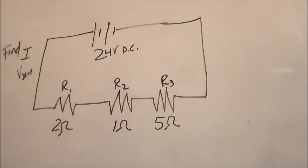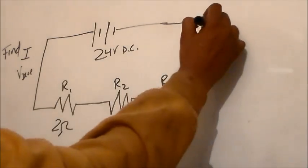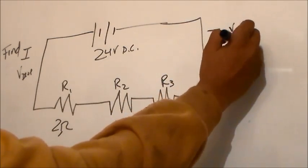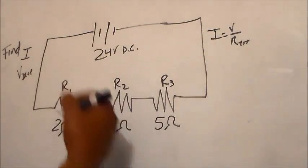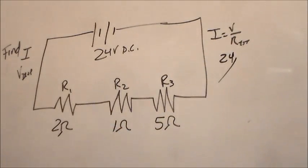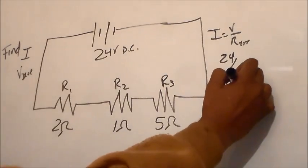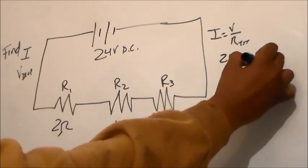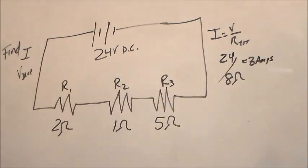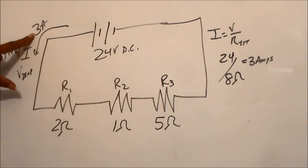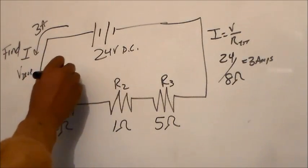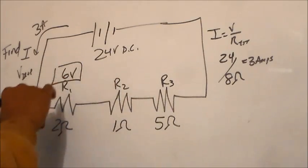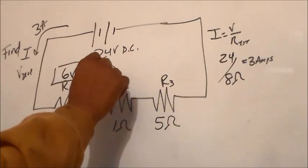To find current, we use voltage over total resistance. We have a 24 volt battery. Total resistance is 2 plus 1 plus 5 because it's in series, which gives us 8 ohms. Dividing 24 by 8, we come up with 3 amps. To find the voltage drop at each resistor, it's current times resistance. We have 6 volts across R1, 3 volts across R2, and 15 volts across R3.